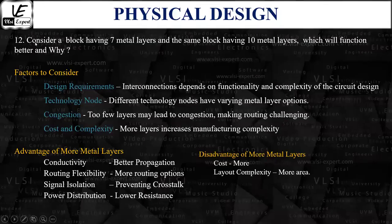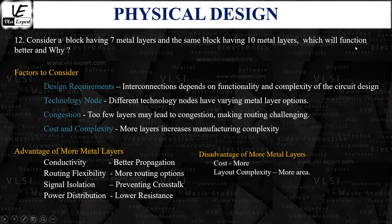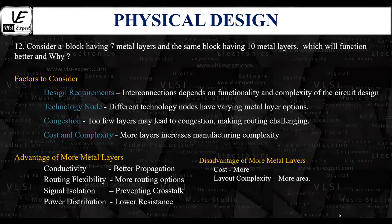Consider a scenario with a block having 7 metal layers and another scenario with the same block having 10 metal layers. Which of the two scenarios will function better and why? In a physical design process, the number of metal layers significantly impacts the performance and functionality of the chip. The metal layers serve as the wiring infrastructure for connecting the different components within a chip.